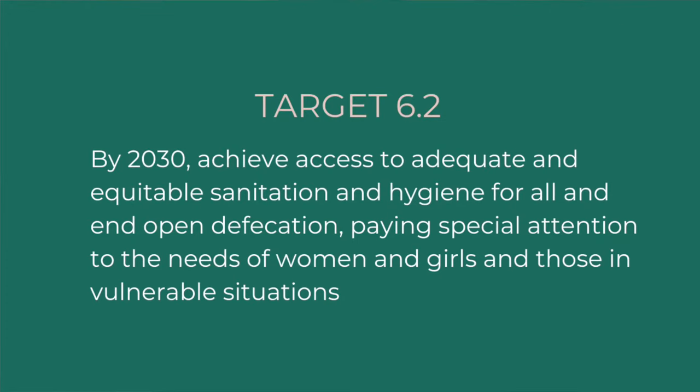Target 6.2: By 2030, achieve access to adequate and equitable sanitation and hygiene for all and end open defecation, paying special attention to the needs of women and girls and those in vulnerable situations. Basic hygiene is one of those things that so many of us take for granted. Having a toilet or a sink just feels like second nature, but there are literally billions of people who do not have access to these services around the globe. This goes beyond just a dignity issue and is also extremely important for public health.